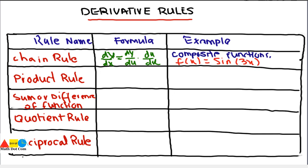The product rule is basically for two functions that are multiplying with each other. If you have functions f and g, their derivative will be found as f times g' plus f' times g. It means the first function stays as it is and you take the derivative of the second, then plus the derivative of the first function times the second function as it is. This is the product rule.